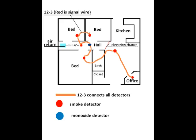If you look at the diagram, you see that there's a smoke detector in every bedroom. There's a smoke detector in the hallway. The little blue dot is a CO2 detector, which is a new code. There's also a smoke detector in the office, which is new code. Smoke detectors are not required in bathrooms or closets. The red wire in the 12-3 acts as the signal wire that connects all the smoke detectors and CO2 detectors together so that if one goes off, they all go off.